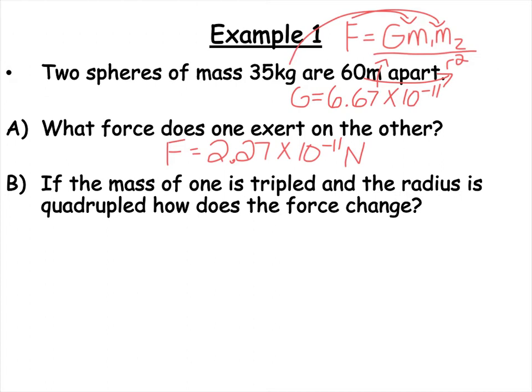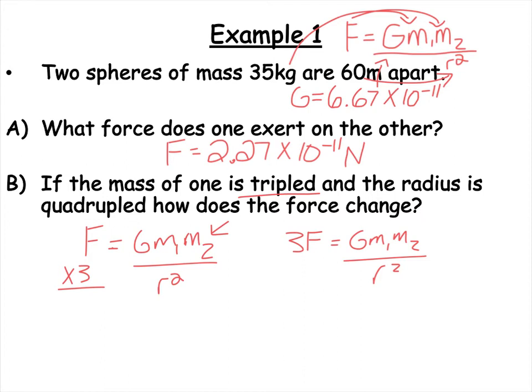If the mass of one is tripled and the radius quadrupled, how does the force change? So here is our equation. If I triple this, it should triple the force, right? So at this point we have tripled the force. Now let's look at our R squared value. If we quadruple R squared, what's that going to do to the force? That's going to cut the force by 1/16th. So we have 3 over 1/16th, which means it will be 3/16ths change. So the mass would times 3 the force, and then the radius would cut it into 1/16th.